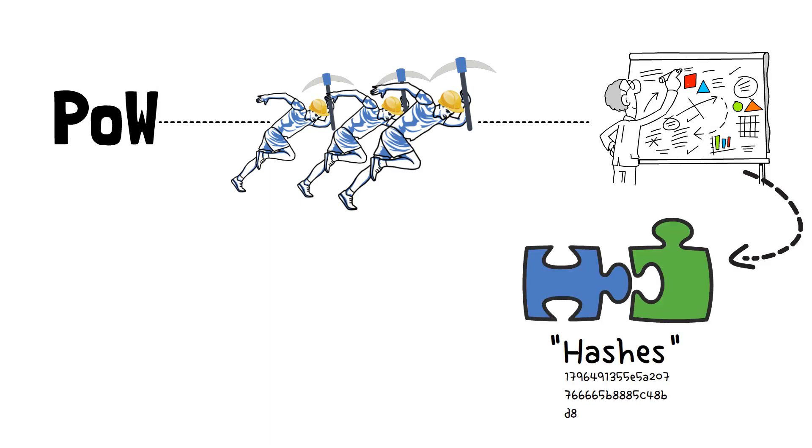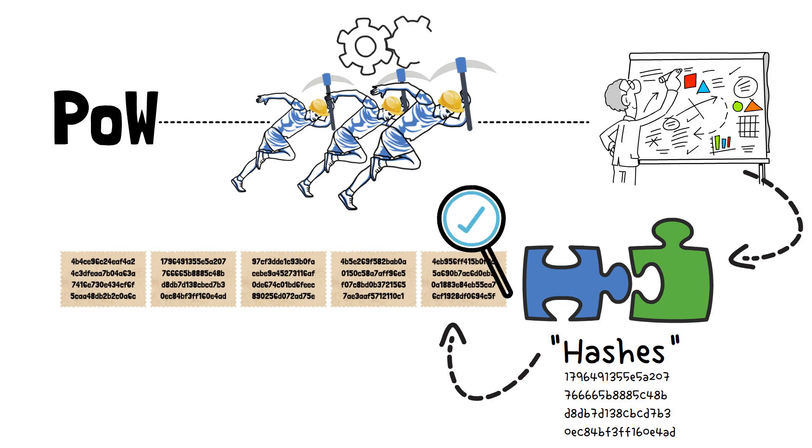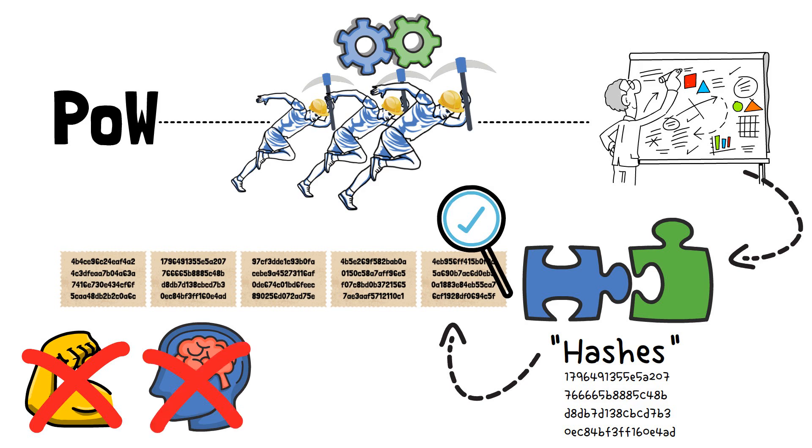Proof-of-work involves miners competing to solve complex mathematical puzzles. These puzzles are known as hashes. Hashes are 64-digit numbers, and in order to find the right hash, miners have to put in quite a lot of effort. But this effort isn't physical or mental. It's pure computational power that requires a lot of electricity.